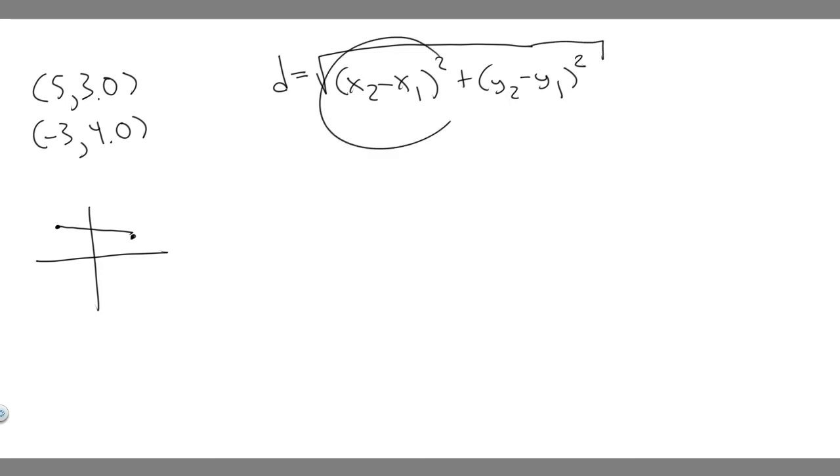So what are x2, x1, y2, and y1? Imagine this is point 1, I'll just call it P1. This is point 2, P2. So x2 would be the x-coordinate on point 2, which is -3. The x-coordinate on point 1, that's x1, would be 5.